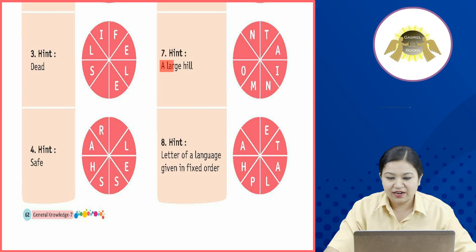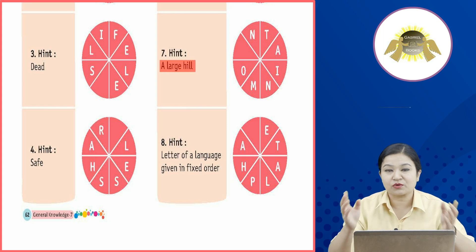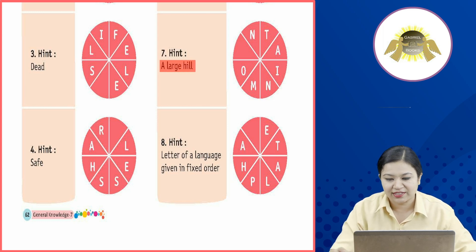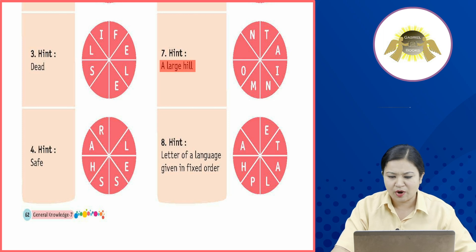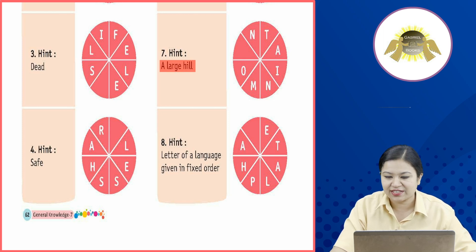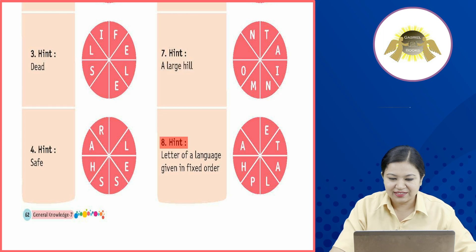Seventh hint: a large hill. एक बड़ा सा hill — उसे हम 'mountain' कहते हैं। Mountain की spelling आपको पता ही होगी, तो आपको यहां पर missing letter U लिखकर इसे complete करना है।